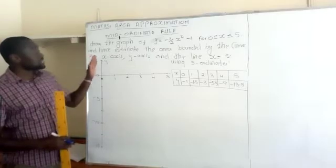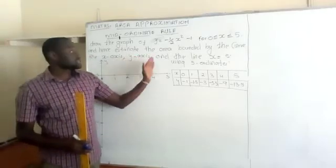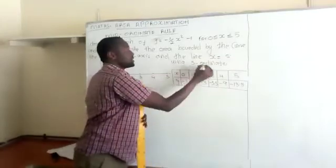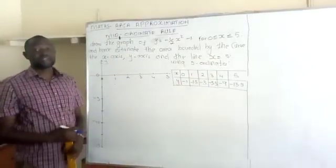the x-axis, the y-axis and the line x equals 5 using 5 ordnates.